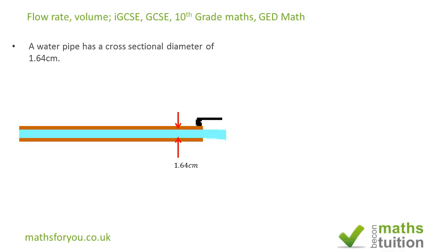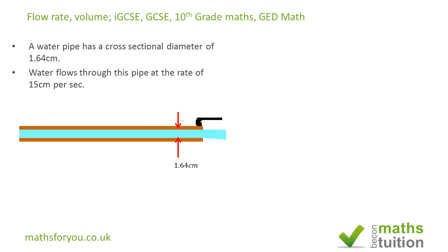Note that in the actual question itself, this diagram is not there — I've just added it to help explain what I'm doing. The water flows at a rate of 15 centimeters per second. Note that this is centimeters, not centimeters cubed. Imagine a little particle: every second, that particle travels 15 centimeters — that is the speed of travel.